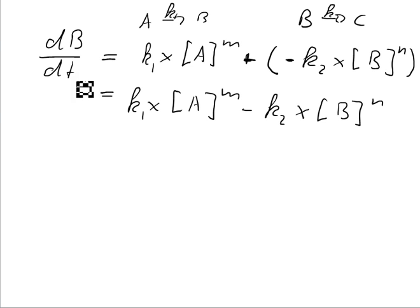Now we might encounter the strange situation that dB over dt equals zero. So that means that the production of B is as fast as the consumption of B. So there would be no further change in the concentration of B.